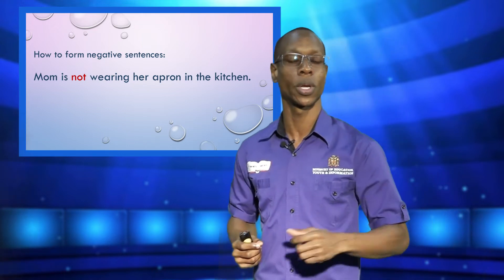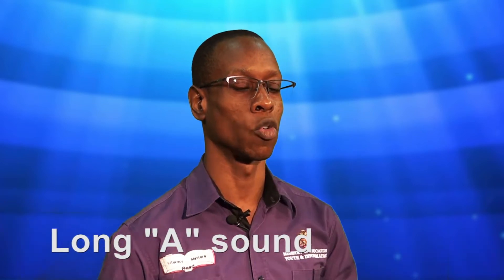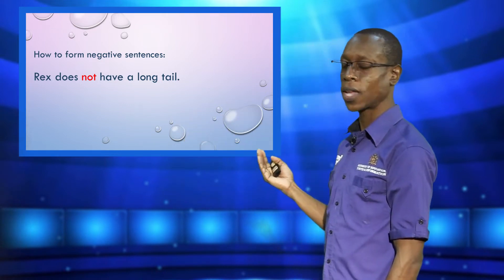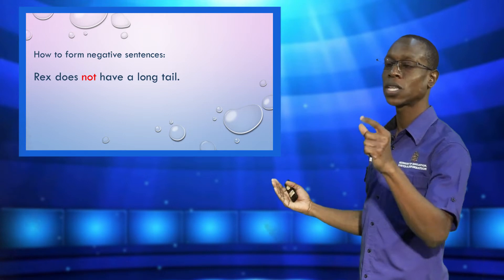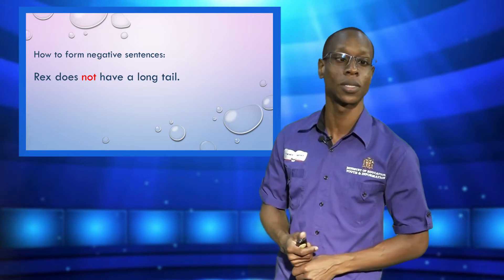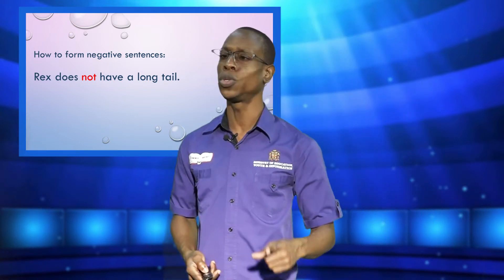Before we continue, can you remind me of the sound the letter A makes in the word 'apron'? That's right — it makes the long A sound. Remember, the long A says its own name. Let's try another example: 'Rex does not have a long tail.' The to-do form is 'does,' and we inserted 'not' right after it, making it a negative sentence.